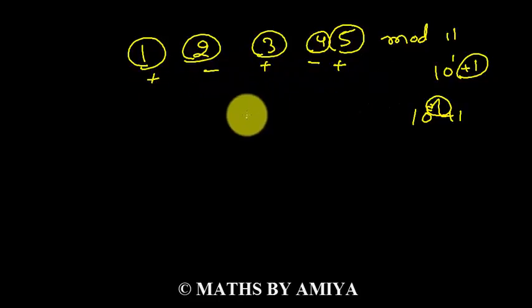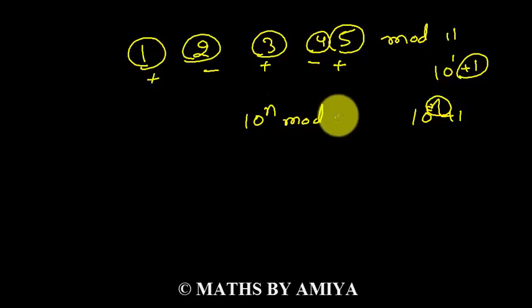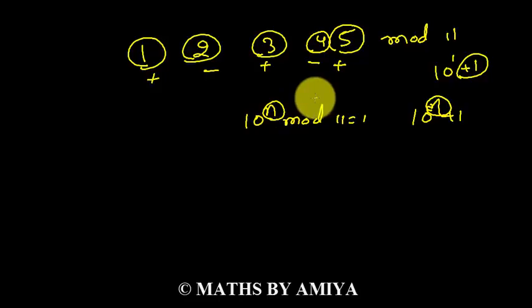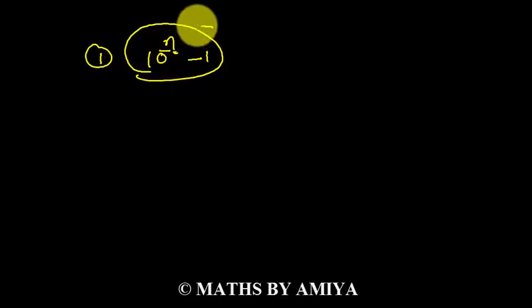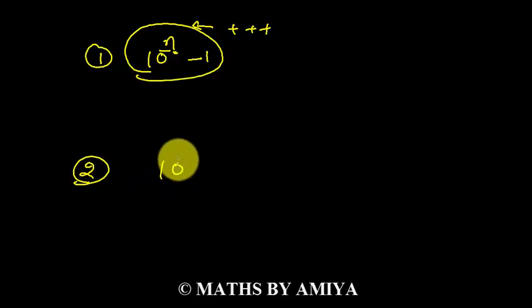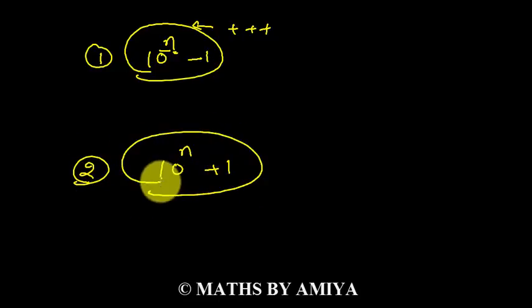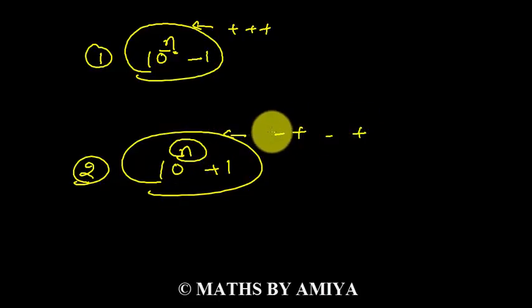This is because 10 raised to power n divided by 11 depends on the value of n, giving a plus, minus, plus, minus alternating pattern. So we have learned two concepts. Concept number 1: when we have 10 raised to power n minus 1 as our divisor, we make a bundle of n digits from the right-hand side and add all bundles with plus signs. Concept number 2: when we have 10 raised to power n plus 1, we use alternating plus, minus signs from the right-hand side.